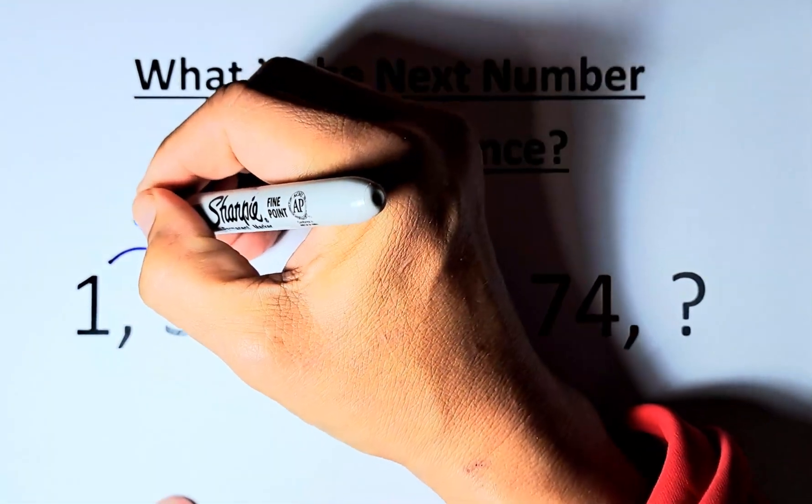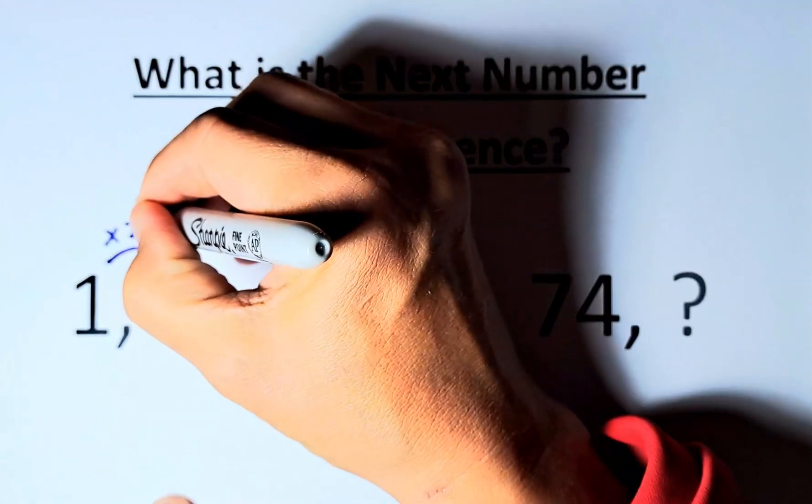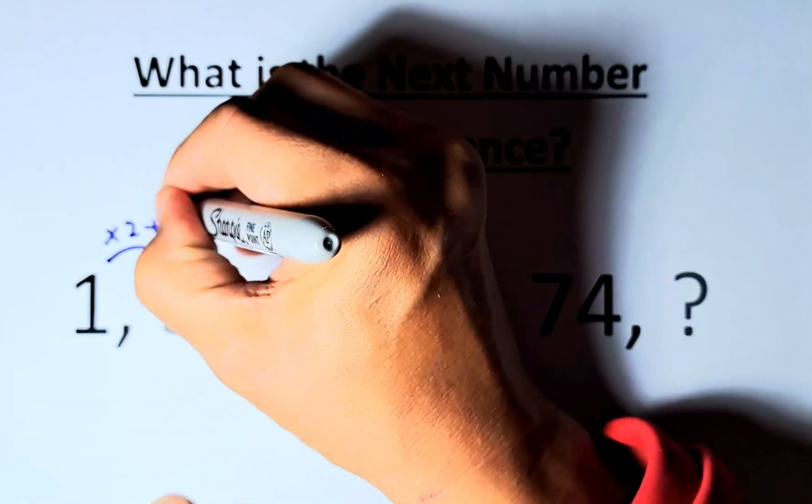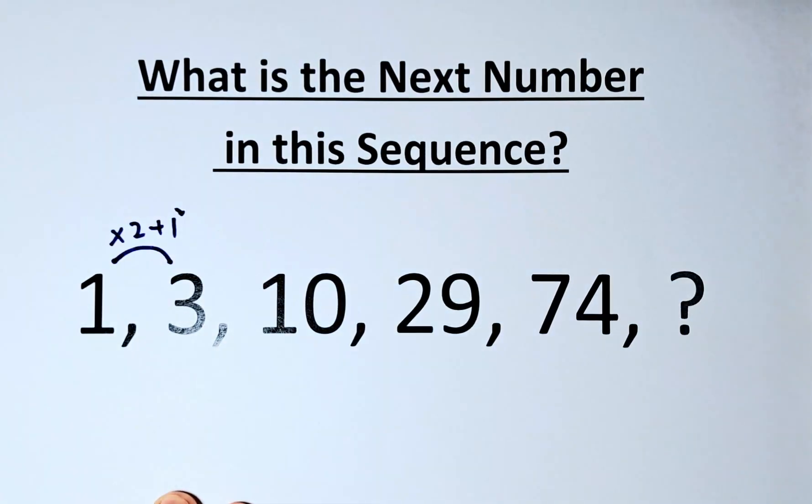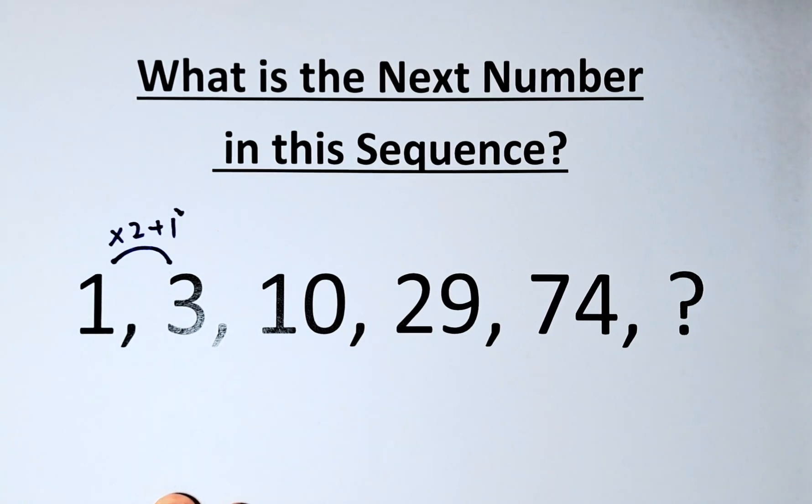You are first going to multiply 1 by 2 and then you're going to add 1 squared. So 1 times 2 is 2, 2 plus 1 squared which is 1. So 2 plus 1, the answer is going to be 3.